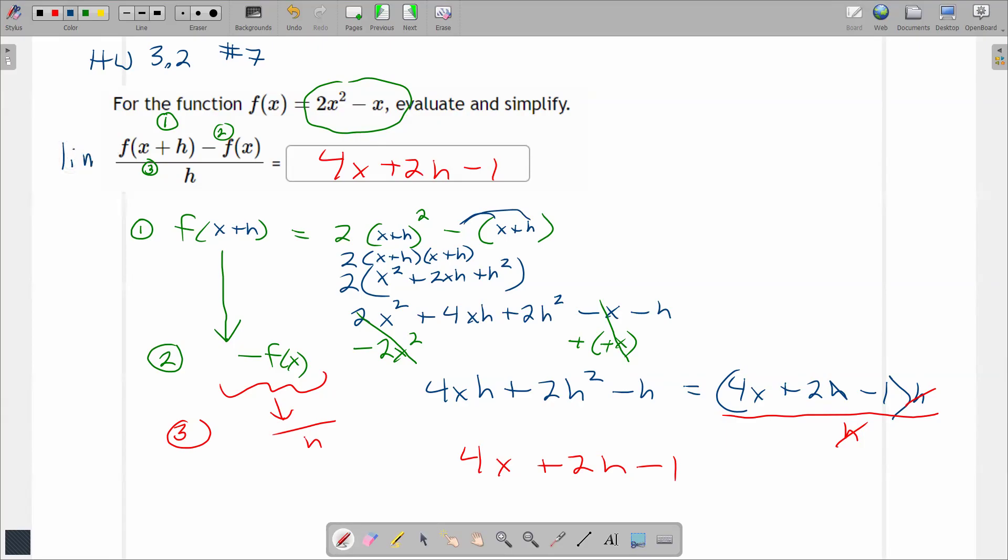I'm going to take the limit of this as h goes to 0. So I'm going to have a step 4. So if I take the limit as h goes to 0 of this, what's left? 4x minus 1. So here's what I know. Since I took the limit, I have found what's called f prime of x. And for this function, f prime of x is 4x minus 1. This is called a derivative function, and that's the slope. It's also the slope function. So now for any number, this tells me the slope at that point. This is called the derivative function. I went a little farther than this problem asked me to do, and it's also called the slope function.